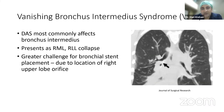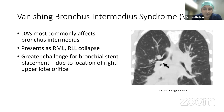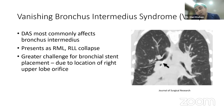Vanishing bronchus intermedius syndrome is a unique complication of lung transplantation not seen in other pathologies. It affects the bronchus intermedius, which can completely disappear. When this is detected, it is very important to aggressively manage with stenting or frequent dilatations. Managing this is particularly challenging because the right upper lobe takeoff is very close to the anastomosis, making stent placement difficult for interventional pulmonologists.